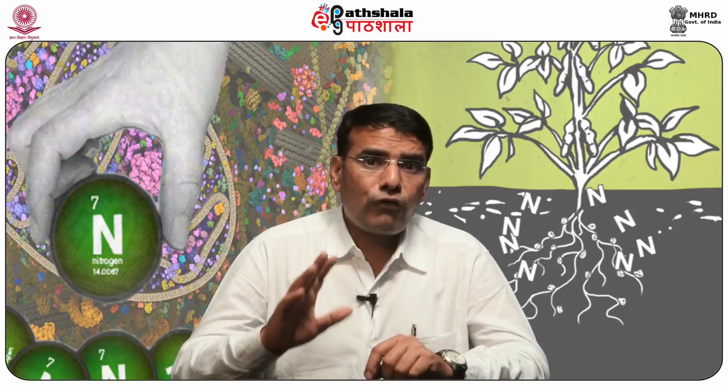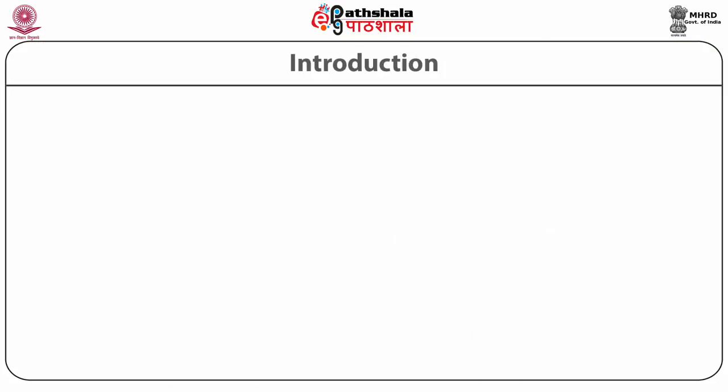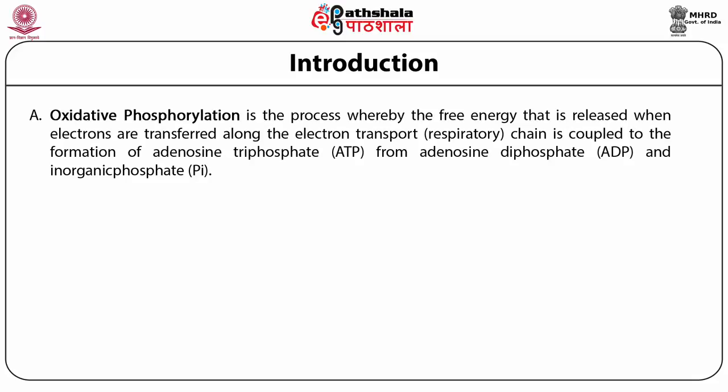In eukaryotes, five main protein complexes are involved, whereas in prokaryotes many different enzymes are present using a variety of electron donors and acceptors. Oxidative phosphorylation is the process where the free energy released when electrons are transferred along the electron transport chain, that is the respiratory chain, is coupled to the formation of adenosine triphosphate from adenosine diphosphate and inorganic phosphate.